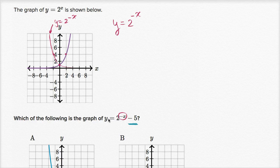And then we have to worry about the subtracting five from it. Well, you're subtracting five from your final y value, so your y value is going to be five lower. So this is going to shift the graph down by five.